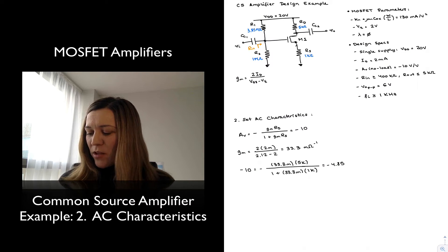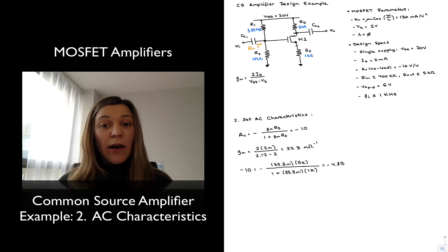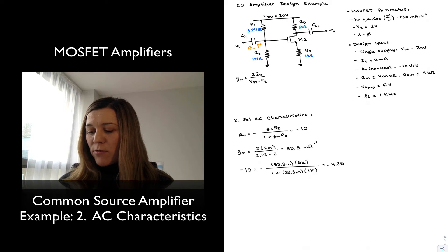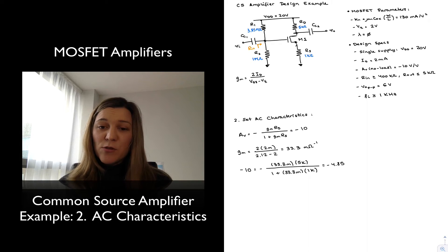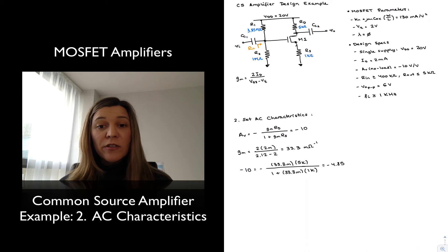And so I'm going to need to alter the value of either my GM or my RD or my RS in order to be able to get the gain that I need. But I want to do that in a way that I don't alter my DC bias points. Now, obviously, altering the value of GM is going to have a huge impact on my DC bias point. Altering the value of RD or RS, I can do without having that much impact. But the value of RD, remember, is set so that we will have the right amount of output voltage swing.